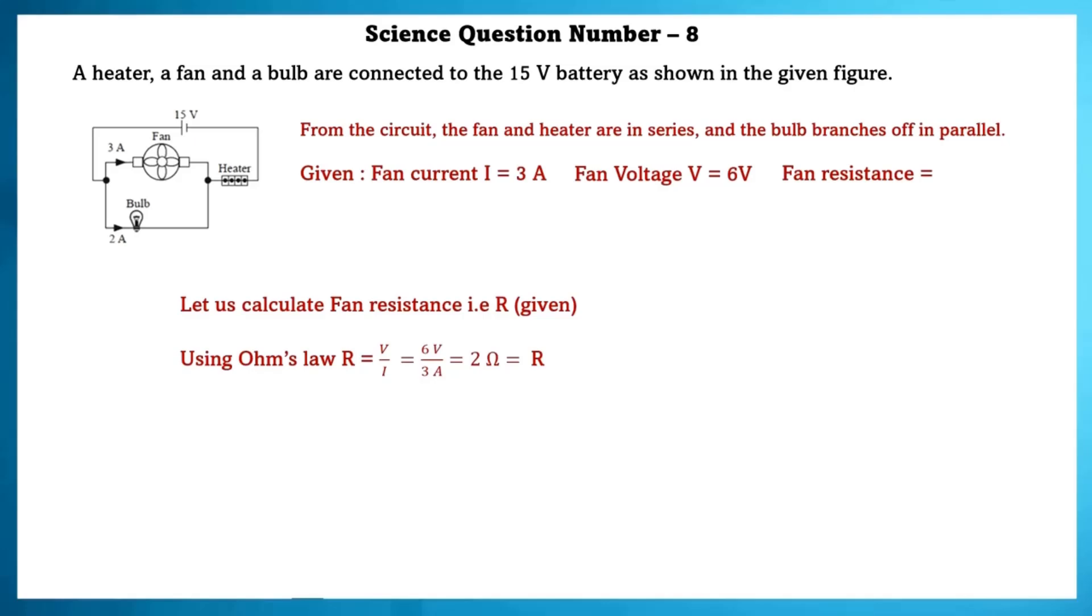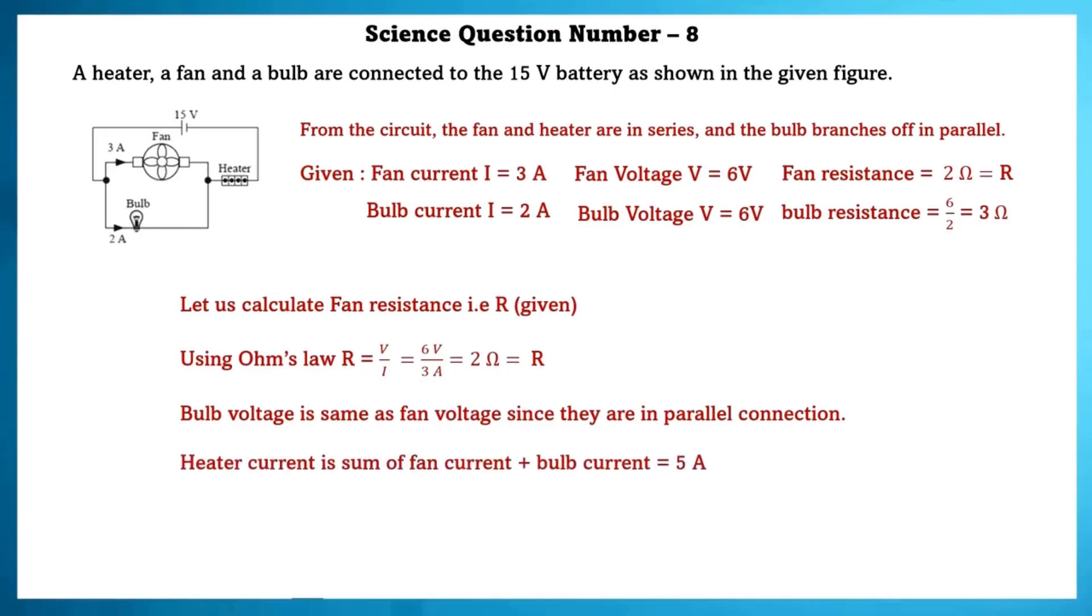Using Ohm's law, R is equal to V by I, which is equal to 6V by 3A, which is equal to 2 Ohms, which is equal to R. Similarly, bulb current I is equal to 2A. Bulb voltage is equal to 6V. Bulb voltage is same as fan voltage since they are in parallel connection. So, bulb resistance is equal to 6 by 2, which is equal to 3 Ohms.